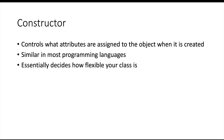So what is a constructor? A constructor is essentially a piece of code that runs when we create an object from our class. It controls what attributes are assigned to the object when it's created. Constructors are usually the same or very similar in most programming languages — Python does it slightly differently. It essentially allows us to decide how flexible our class is. If we only had one constructor, we'd be saying there's only one specific way to define an object from this class.